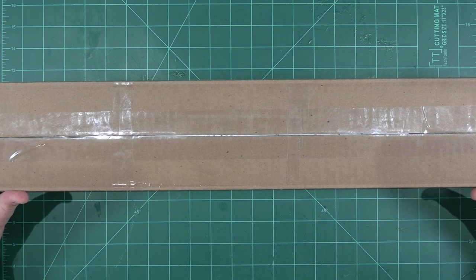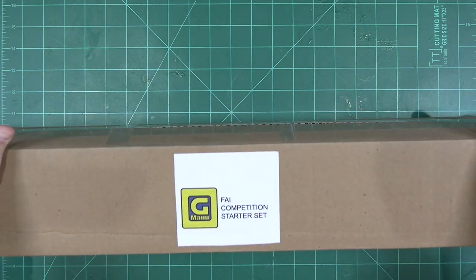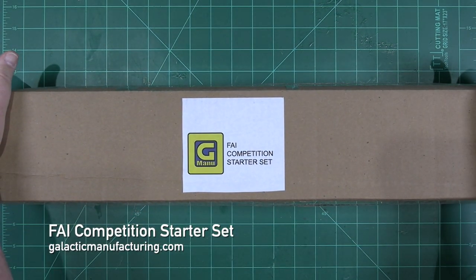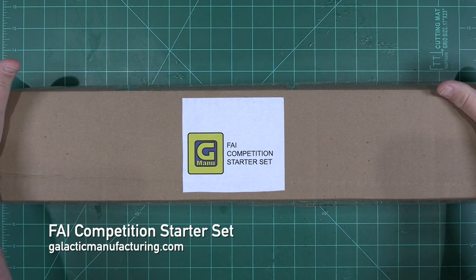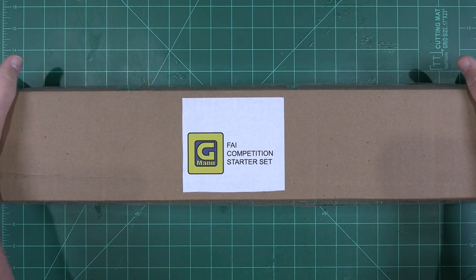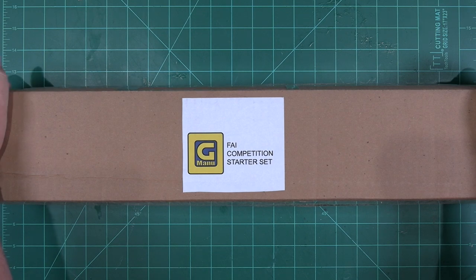James Duffy here with a combined unboxing and build video featuring the new FAI competition starter set from Galactic Manufacturing. This set will allow you to build two complete airframes for parachute, streamer, or helicopter duration as flown in Federation Aeronautique Internationale competition.